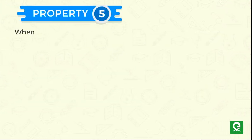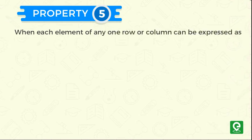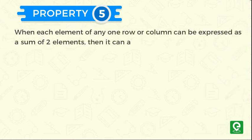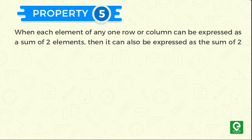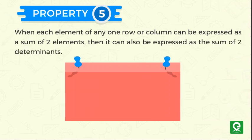Property 5: When each element of any one row or column can be expressed as a sum of two elements, then it can also be expressed as the sum of two determinants. For example,